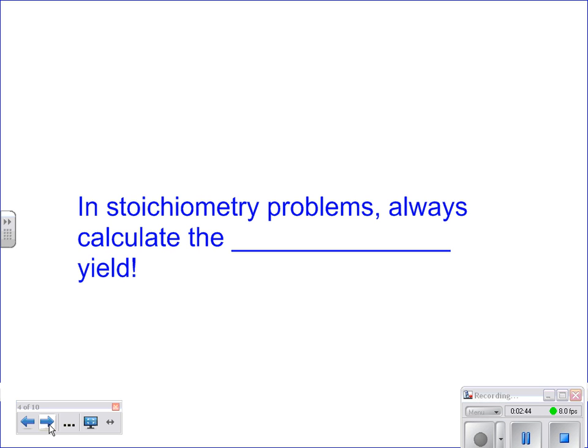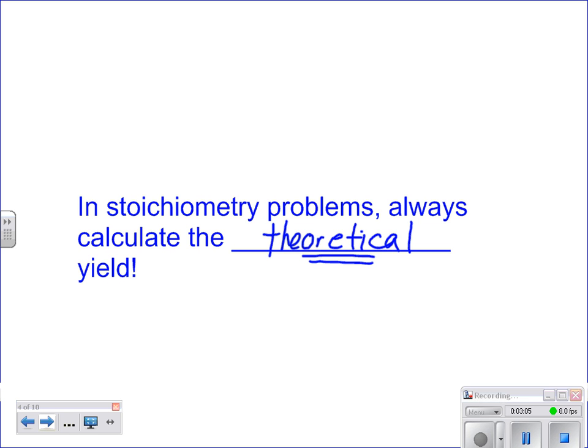As you go through this, remember that in stoichiometry problems, you always calculate the theoretical yield. Your actual will be given most likely, and you will have to calculate your theoretical yield. There's also a chance it will give you your percent yield and ask you to calculate your actual yield. First example: just like we talked about yesterday, we're always going to start with a balanced chemical reaction.